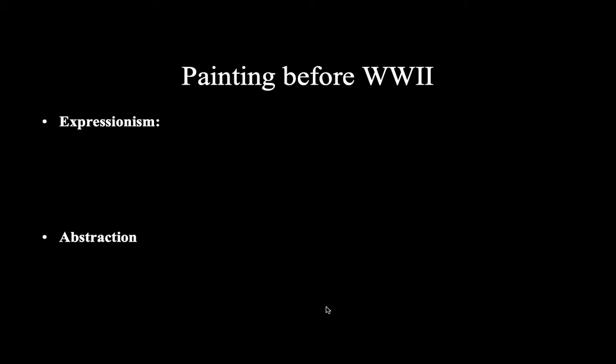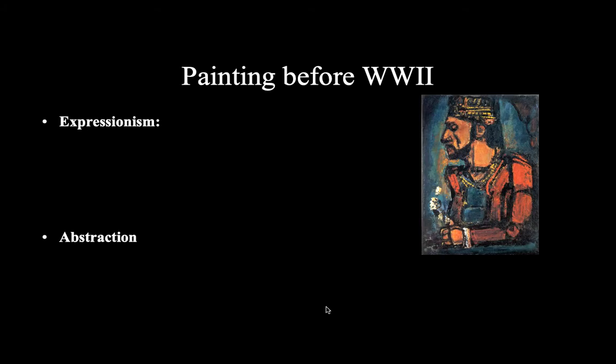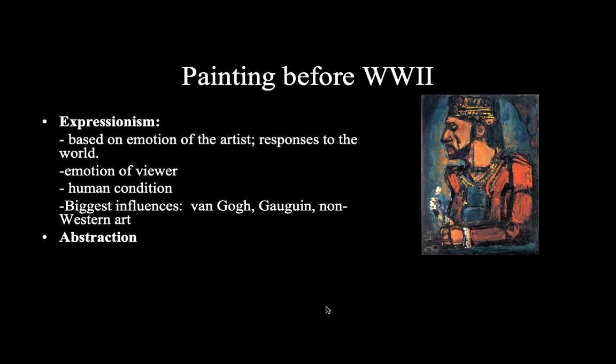So we have Expressionism. We've already talked about Expressionism — it's based on emotion. We've already talked about people like Van Gogh or Gauguin, who looked at things like non-Western art and were trying to explain emotion, either their own or putting emotion into the people that they're depicting.